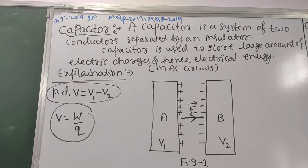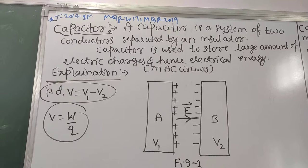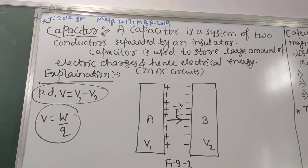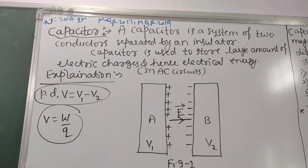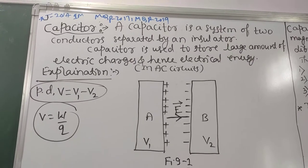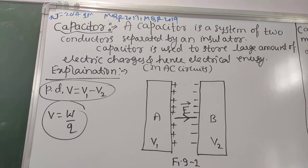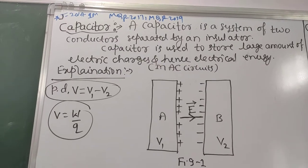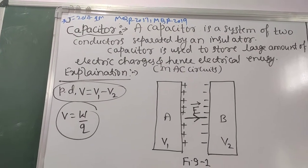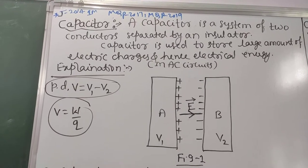Let us see what is a capacitor. A capacitor is a system of two conductors separated by an insulator, where insulator refers to a dielectric substance. This definition appears in exams — June, MQP, 2017, 2019 — as a one-mark question.